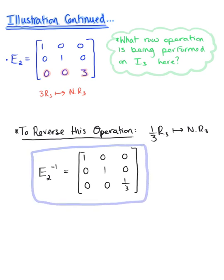A great way to make sure you have the correct inverse for your elementary matrix is to check. We can always verify: does E sub 2 multiplied by its inverse equal the 3 by 3 identity matrix? And don't forget, since matrix multiplication is not commutative in general, we also want to check that E sub 2 inverse multiplied by E sub 2 is also equal to the identity matrix.